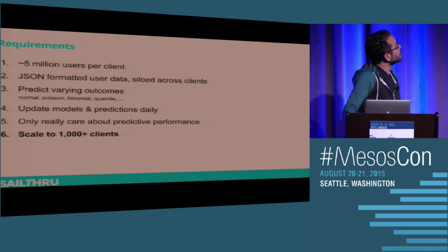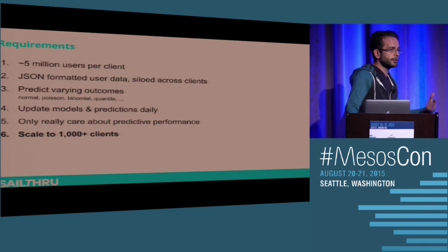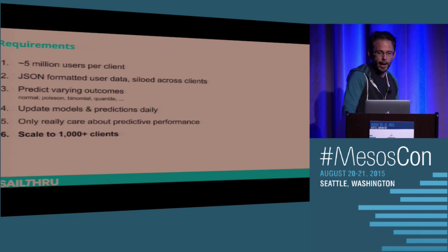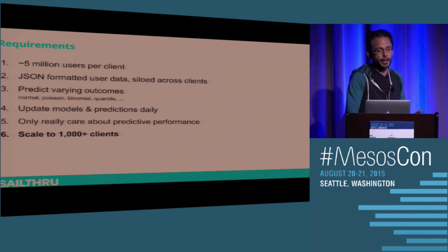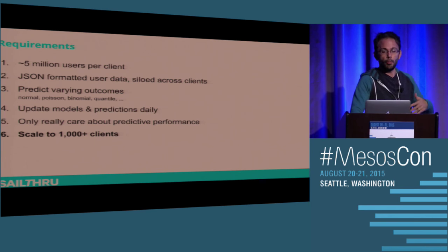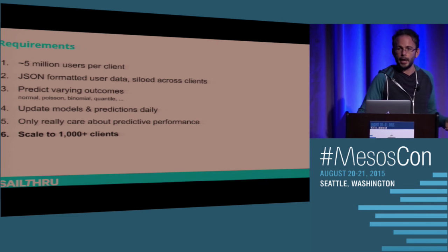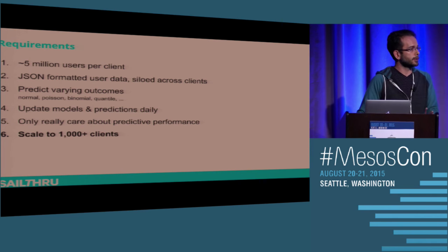The requirements: we assume about 5 million users per client. The data comes out of MongoDB in JSON format and is siloed across all clients. We want to predict varying outcomes — some binary with a binomial distribution, others quantitative like purchase price following a normal distribution, and others Poisson or quantile distributed. We want to build predictive models, update them every day, and run predictions at least daily. It's a really large batch computation process, and we only care about predictive performance. We want to scale this to thousands of clients.